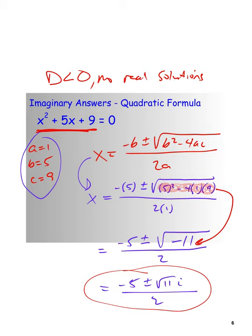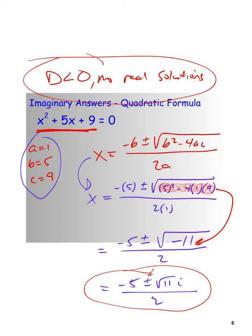This is actually two answers: negative 5 minus root 11 i over 2, and negative 5 plus root 11 i over 2. Those are our imaginary answers to this quadratic. Our life was a little easier because root 11 is prime, so there was no simplifying of that radical. If it were root 12, we would want to simplify the radical so we could start to reduce the fraction.